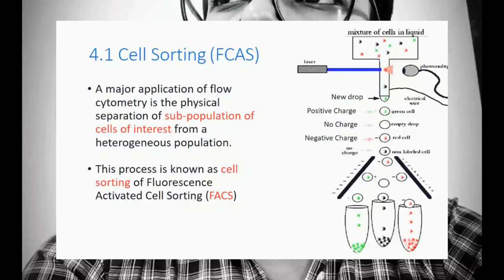This phenomenon is called FACS — Fluorescence Activated Cell Sorting — which is a derivative of flow cytometry. People are often confused between FACS and flow cytometry, but do not get confused: FACS, whether you say fluorescence activated cell sorting or fluorescence cell activated sorting, is the derivative of flow cytometry.